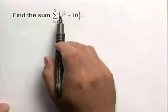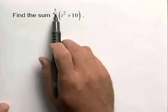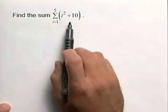This problem involves summation notation. We have the summation from i equals 1 up to 5 of the expression i squared plus 10.